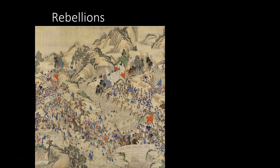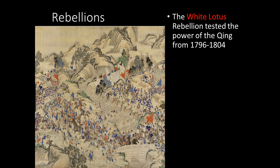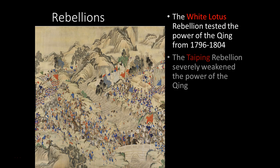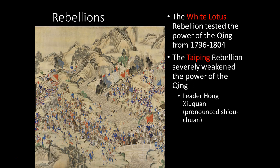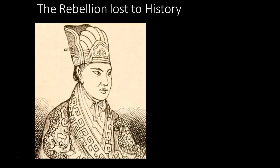The White Lotus Rebellion begins to show cracks, but it's the Taiping Rebellion that reveals the Qing's true weakness, coinciding with Britain bringing opium into the country. The leader of the Taiping Rebellion is Hong Xiuquan, who believes himself to be the brother of Jesus Christ. He leads a massive rebellion claiming to spread Christianity, and it costs millions to put down.